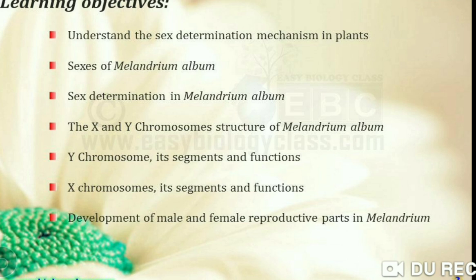How is sex determination happening? What type of sex is happening — male or female? How is the sex determination happening? We will see. And then, the X and Y chromosome. As we all know, X and Y chromosomes are the sex determination chromosomes.